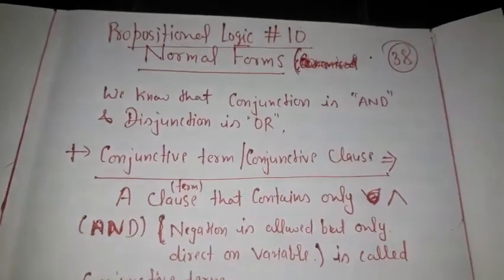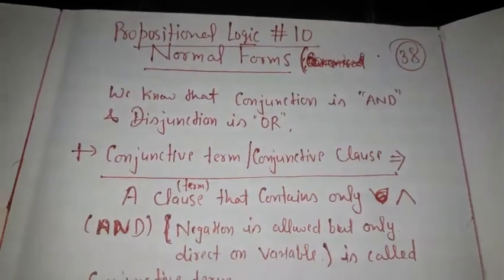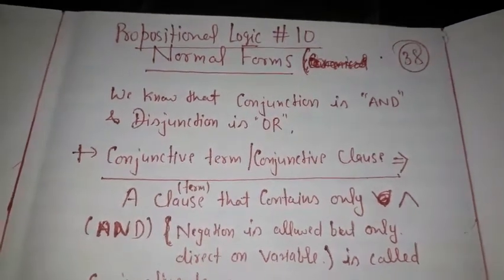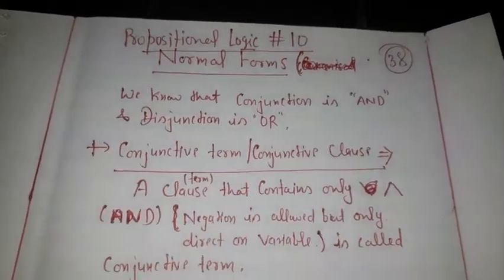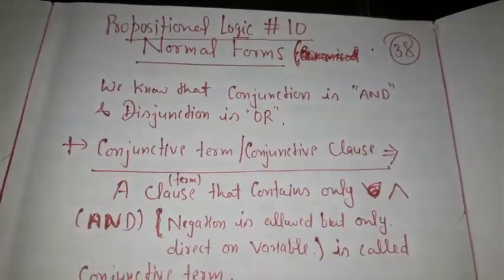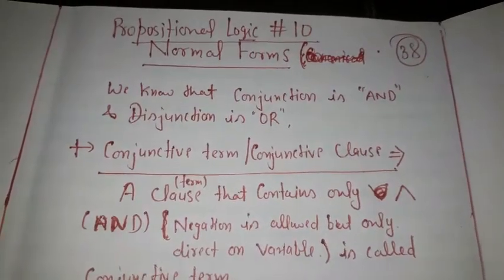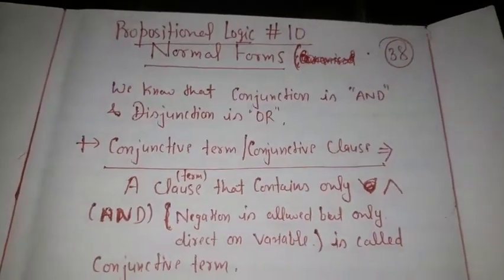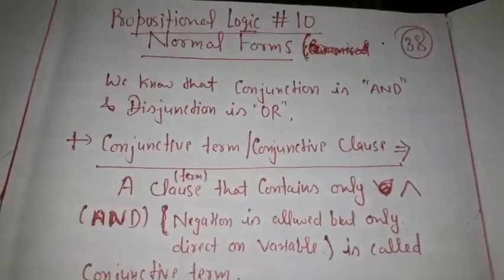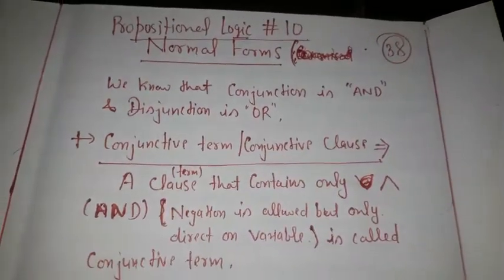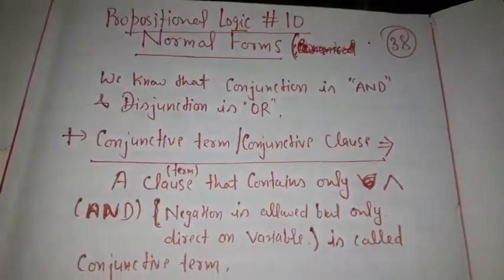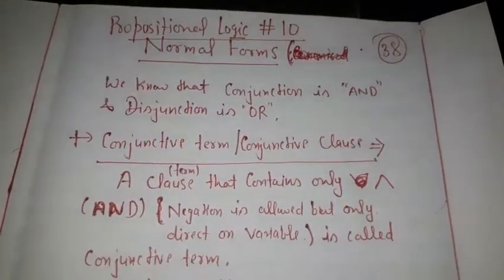There are two operations which we have learned in the previous lectures: the conjunction and the disjunction. The conjunction is basically equivalent to the AND operation and the disjunction is logically the OR operation.